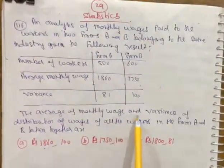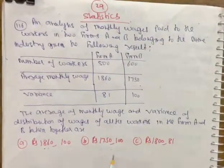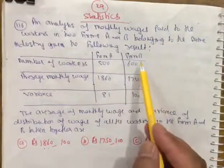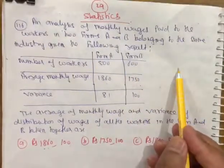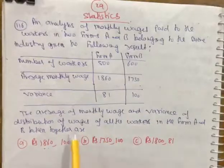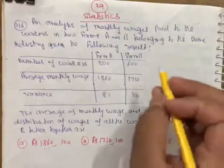The question asks for the average monthly wages and variance of the distribution of wages of all the workers in firms A and B combined. The total workers is 500 plus 600 equals 1100. We need to find the average and the variance for the combined distribution.